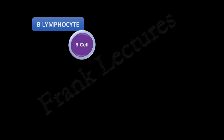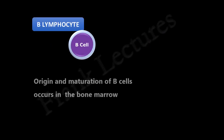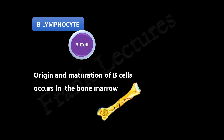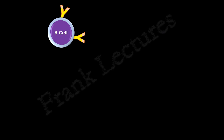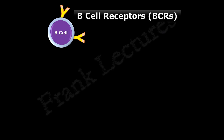We have studied earlier that origin and maturation of B-cells occur in the bone marrow. Then these mature, naive B-cells are released into the blood. They keep recirculating between lymph, blood, and secondary lymphoid tissues. These B-cells have specific receptors on their membrane for antigen recognition, known as B-cell receptors.